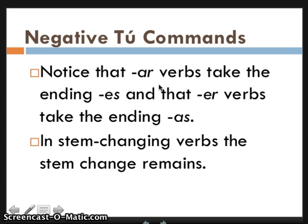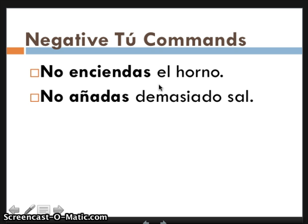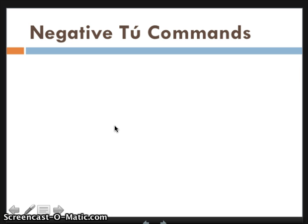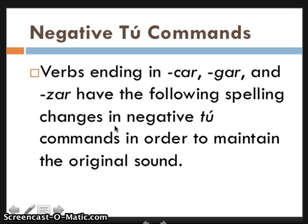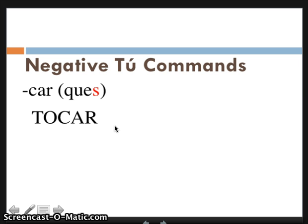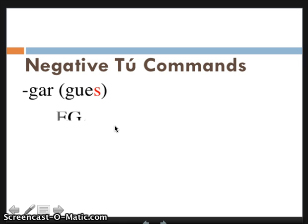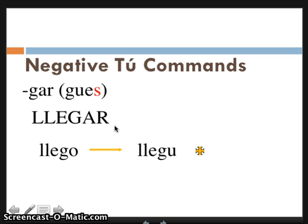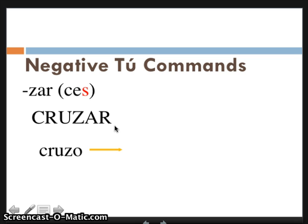Stem-changing verbs are still going to stem-change. Verbs ending in -car, -gar, and -zar are going to do the same thing they do in the preterite: -car becomes -qu, -gar becomes -gu, and -zar becomes -c, but because it's not the preterite yo form, it's not going to have an accent on the e. That's exactly why accent errors on those were a big deal — you were completely changing what the verb meant. So 'tocar' becomes 'no toques,' 'llegar' becomes 'no llegues,' and 'cruzar' becomes 'no cruces.'